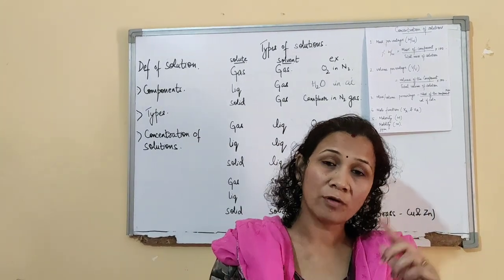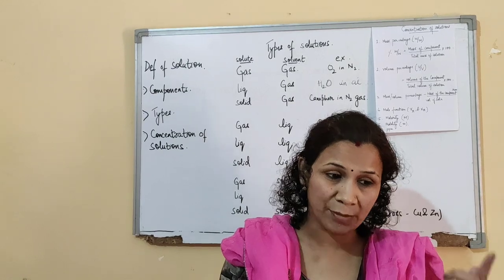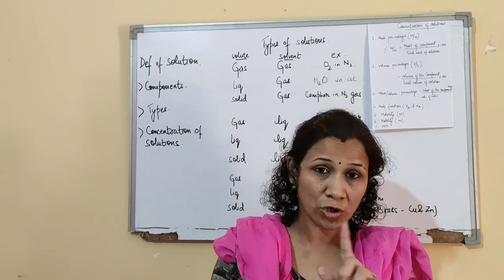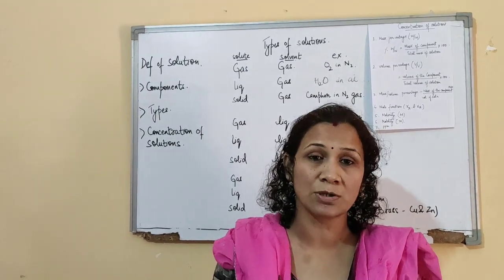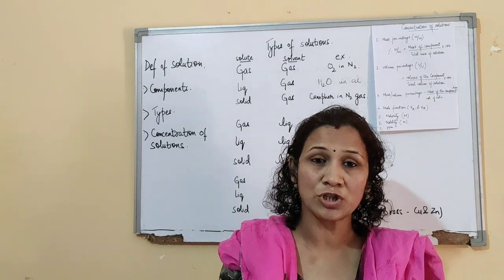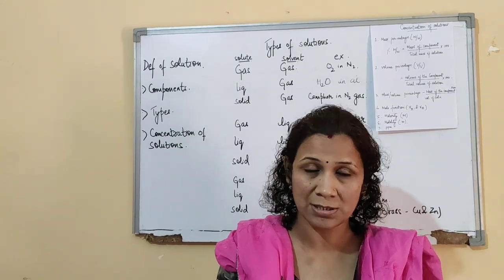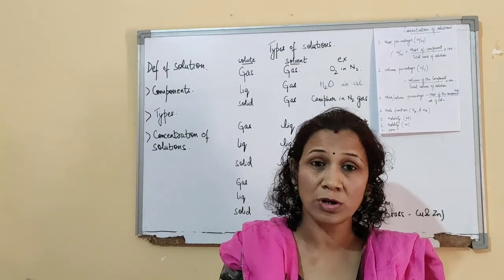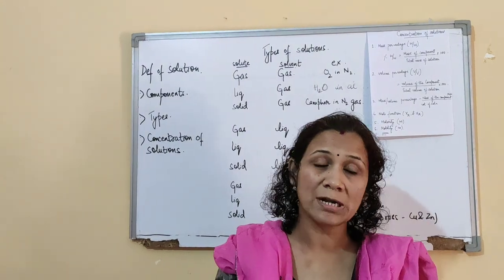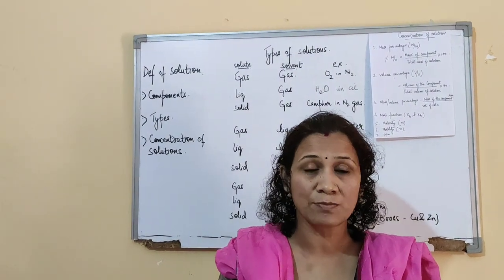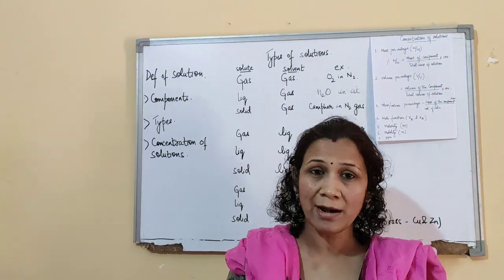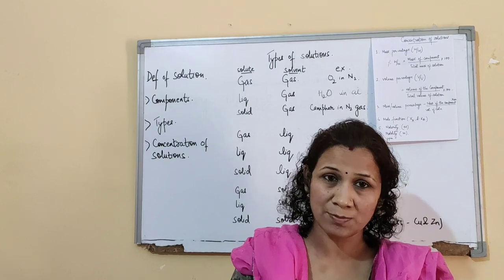Then if you talk of the other type — mixtures in which it is not uniformly distributed, like alloys. Alloys are a mixture of metals, but the metals are not of uniform composition. So we call it a heterogeneous mixture. So we have homogeneous mixture and heterogeneous mixture.